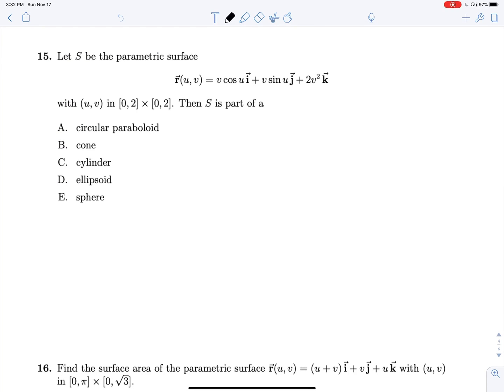We're back. Question 15, let S be this parametric surface where U runs from zero to two and V runs from zero to two. Then pretty much we're just identifying what parametrization, what kind of surface we're dealing with here. We see that we have a cosine U and a sine U in our I and J components, so we know that that's going to be just tracing out a circle.